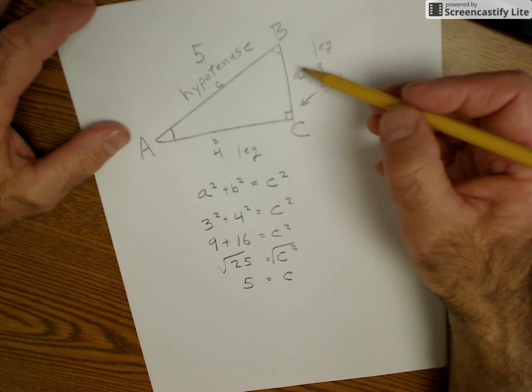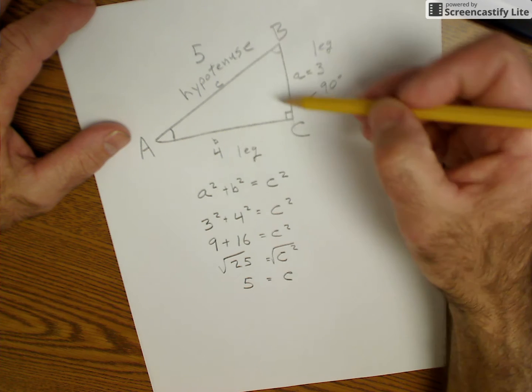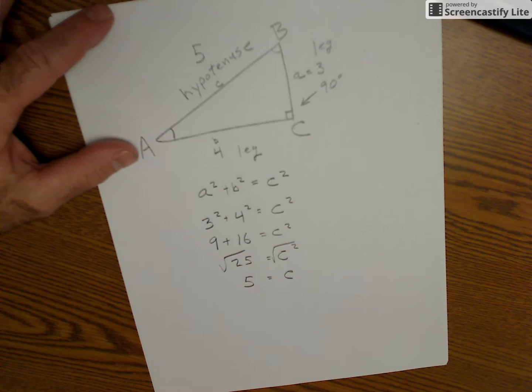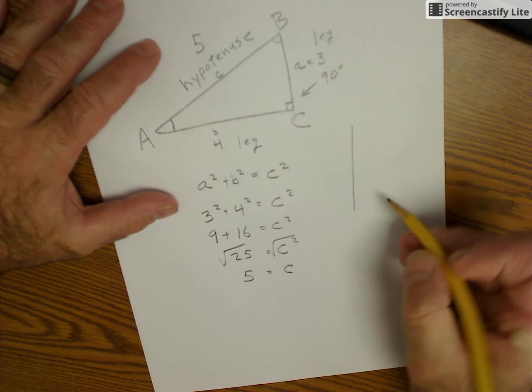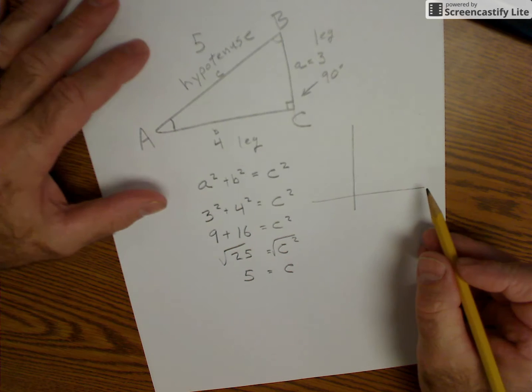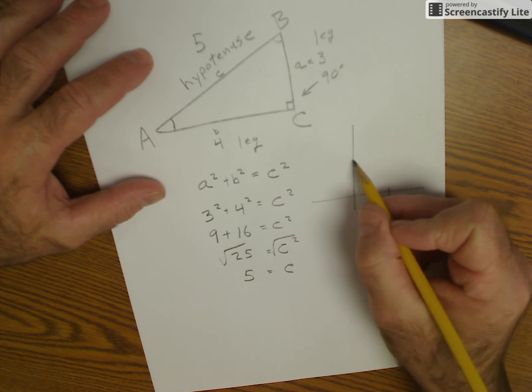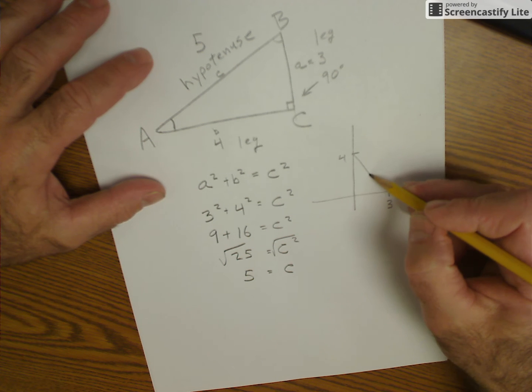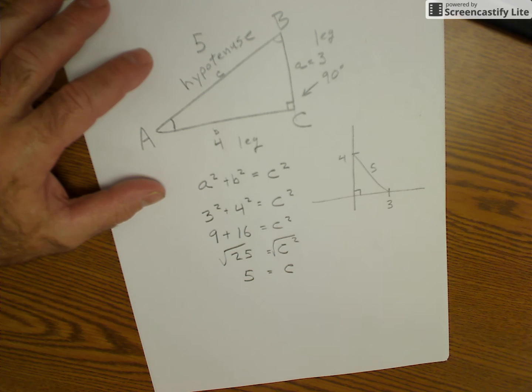That's because if this is 3, this is 4, and this is 5, then it has to be a right angle. So you could check squareness. If you have a fence off another fence or a property line, if you measure any increment of 3 foot down here, 4 foot down here, and then pull a string tight to 5 foot, then this has to be square.